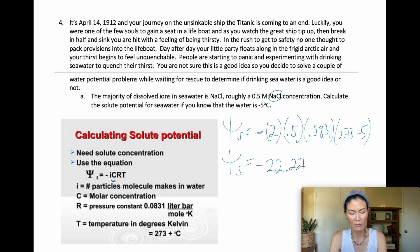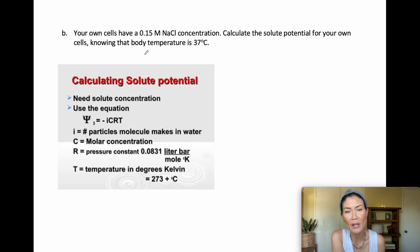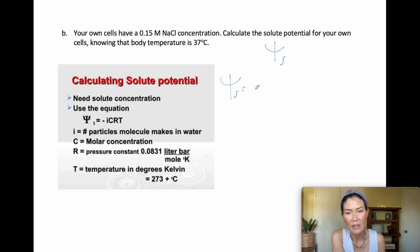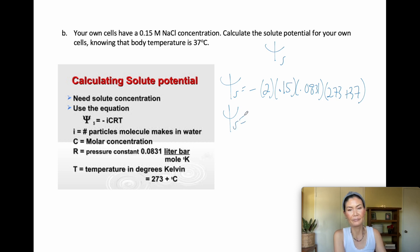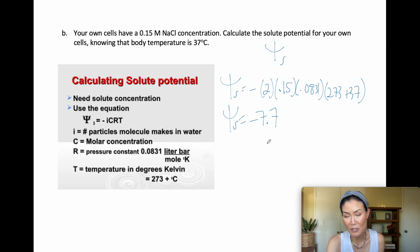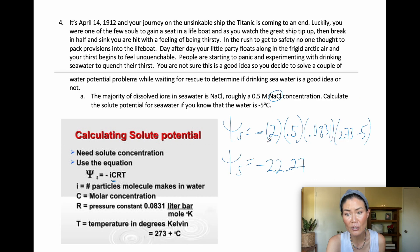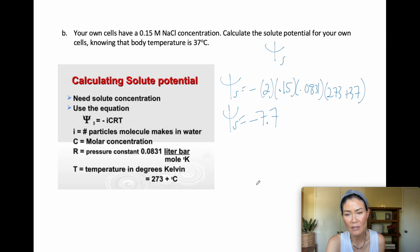Your own cells have a 0.15 molar NaCl concentration. Calculate the solute potential for your own cells knowing body temperature is 37°C: solute potential = −2 × 0.15 × 0.0831 × (273 + 37) = −2 × 0.15 × 0.0831 × 310 = approximately negative 7.7. So solute potential of your cells is −7.7 compared to seawater at −22.27.